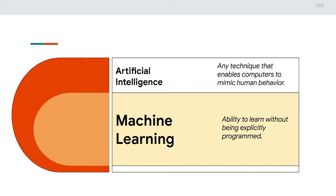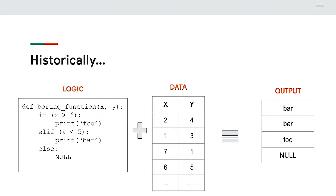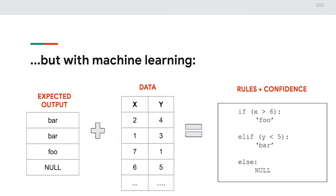Machine learning is where it gets more interesting, and this is when I first got excited about computer science. It's the ability to learn without being explicitly programmed — so instead of you as a developer being responsible for explicitly defining all of the logic, you can have a machine do it for you. Historically, you would have if-else statements, heuristically defined rules, and input data to get back some output. With machine learning, you have your expected output and input data, and you get back those rules and confidence levels.